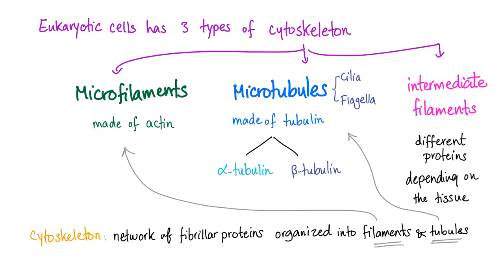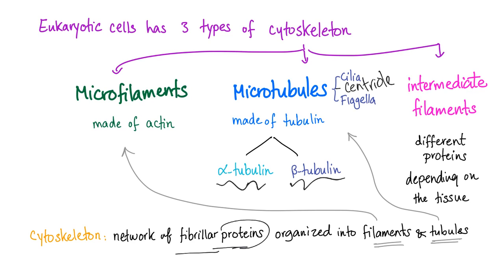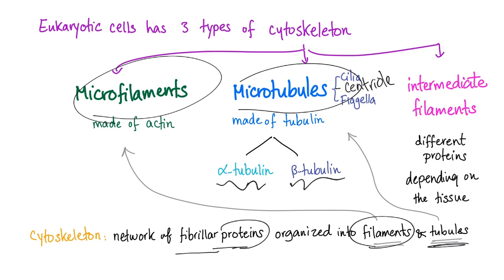Microfilaments are made of actin. Microtubules are made of tubulin. Intermediate filaments are made of different proteins depending on the tissue. Microtubules form cilia, flagella, and something called the centriole. We have alpha-tubulin and beta-tubulin — that's why the cytoskeleton is described as a network of fibrillar proteins organized into filaments (microfilaments) and tubules (microtubules).